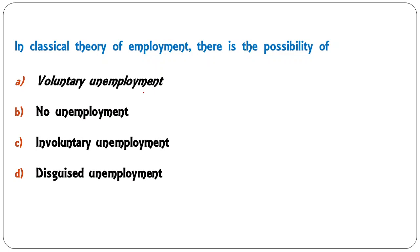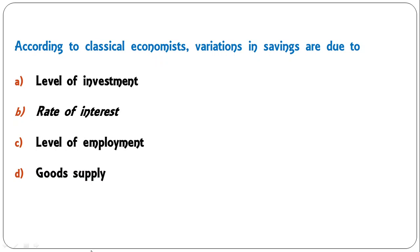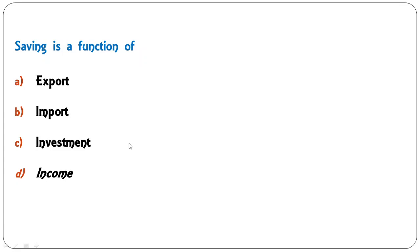In classical theory of employment, there is a possibility of voluntary unemployment, no unemployment, involuntary unemployment, or disguised unemployment? Classical economists believe in full employment, but there could be a possibility of voluntary unemployment if people voluntarily remain unemployed. So A is the correct answer. According to classical economists, variations in saving are due to level of investment, rate of interest, level of employment, or good supply? It is the rate of interest under classical economics on which savings depend. B is the correct answer.